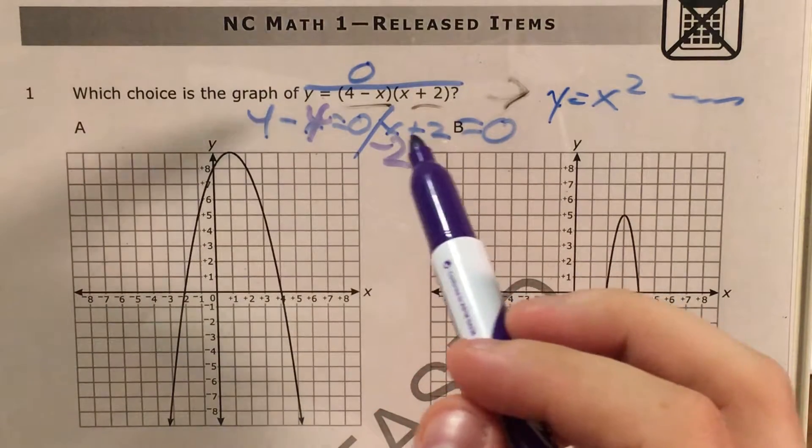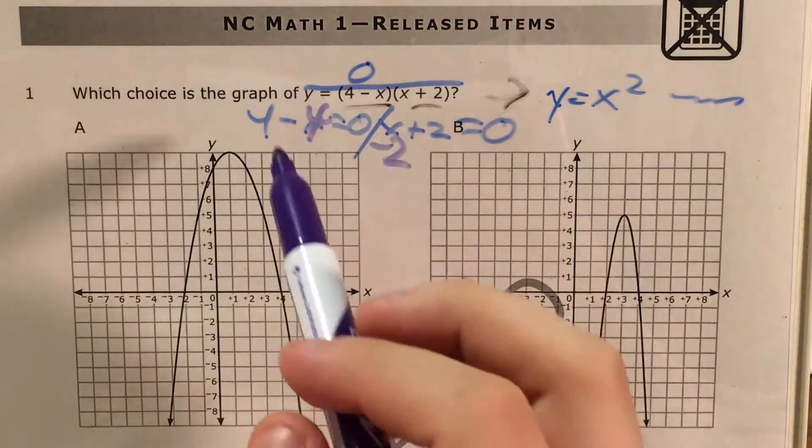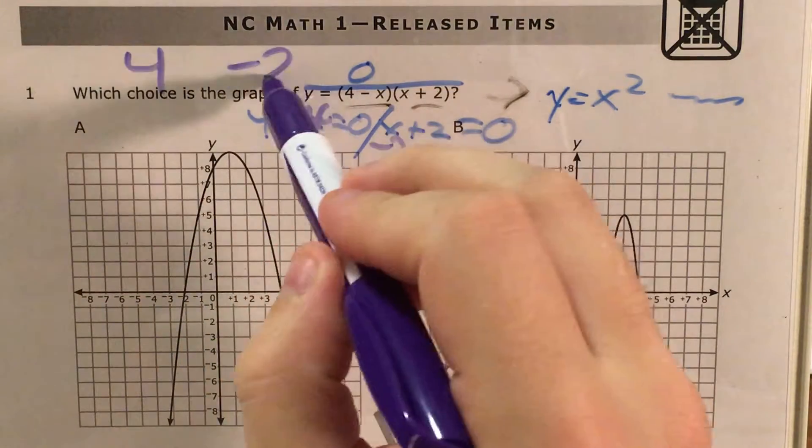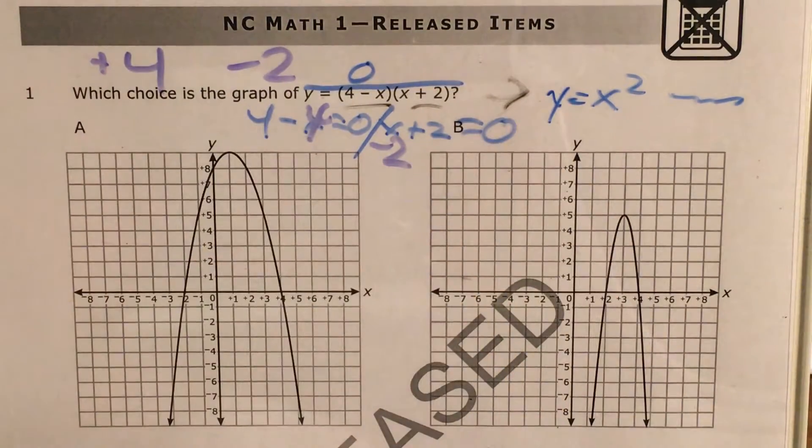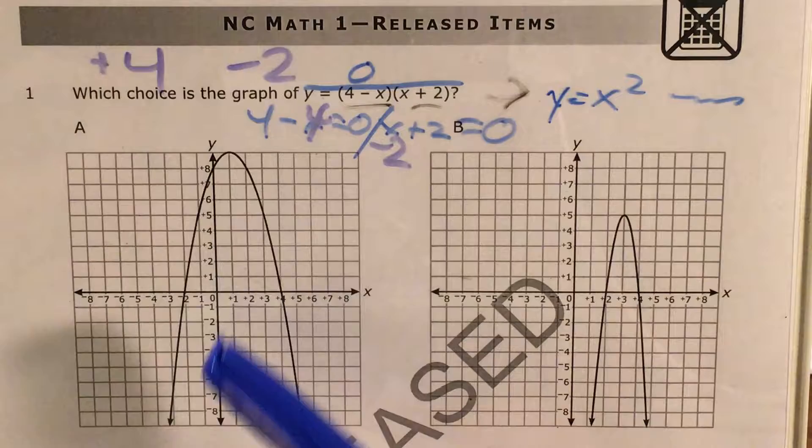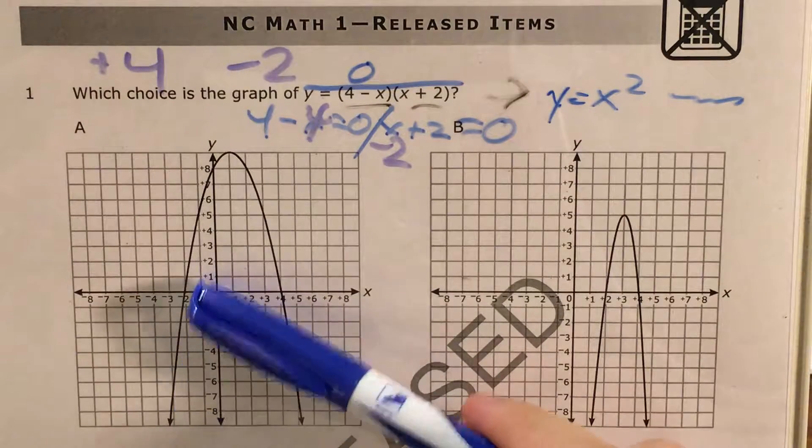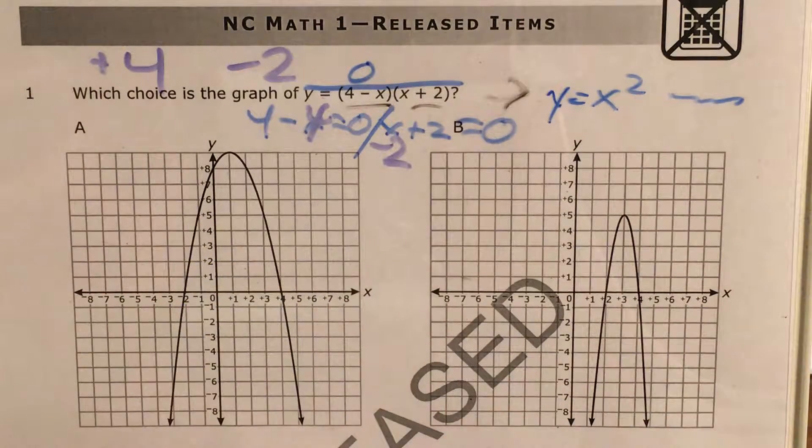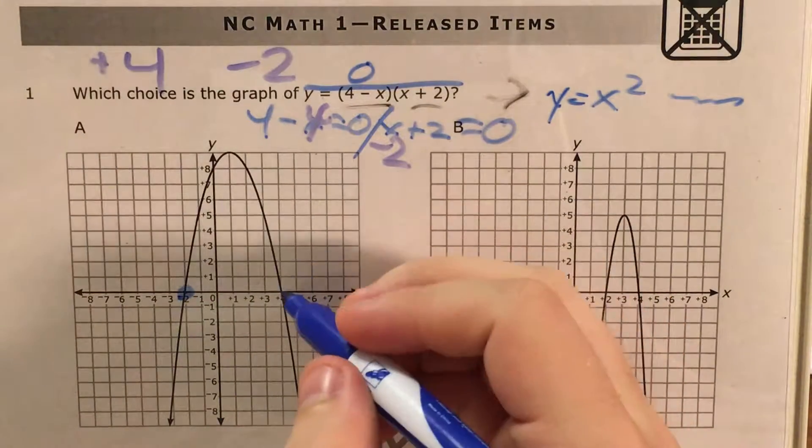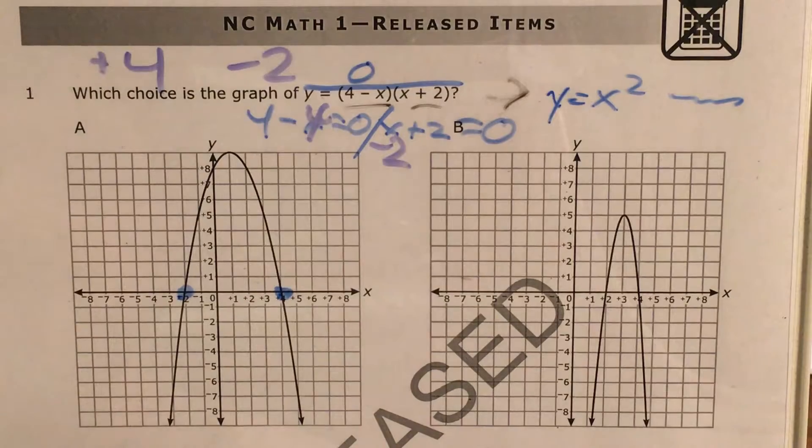So that tells me that I'm looking for an answer choice that has a 0 at positive 4 and negative 2. And as I look at my answer choices, I can see that in choice A, this parabola is hitting at negative 2. That's one of the ones that I wanted to see, so that one works. And then it comes up and hits at positive 4. That's the other one I wanted to see.